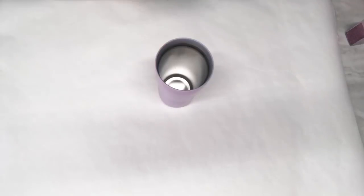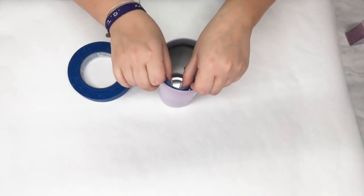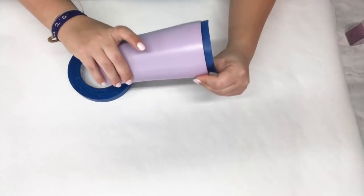To start this project, I'm going to tape off the inside of my cup. You can use masking tape or electrical tape. I'm just going to tear off little pieces and wrap it around.